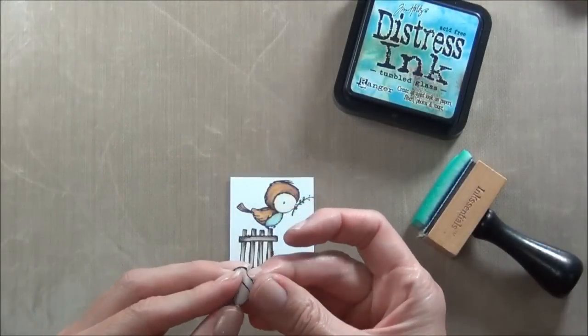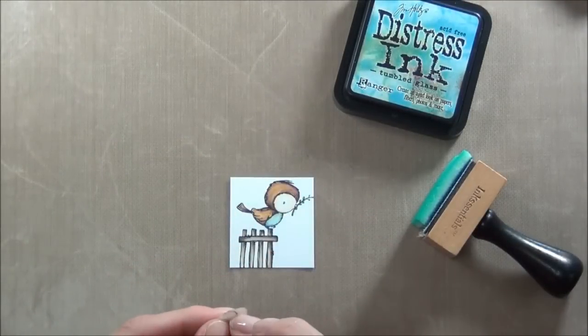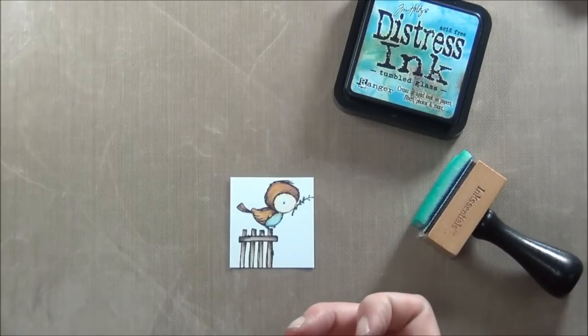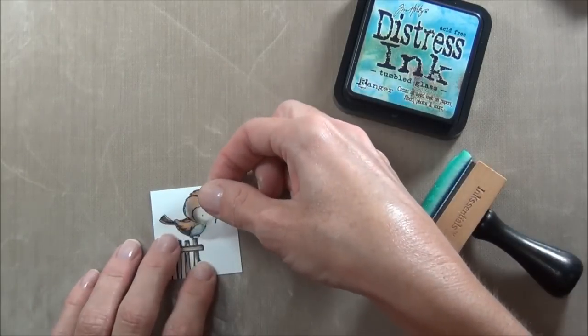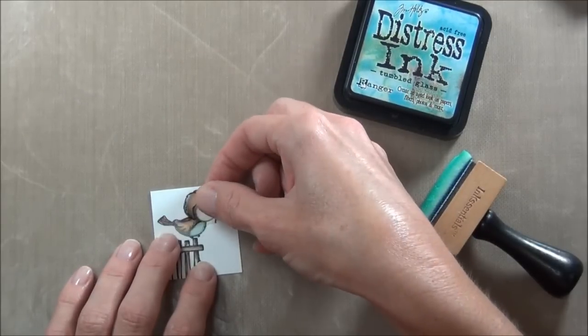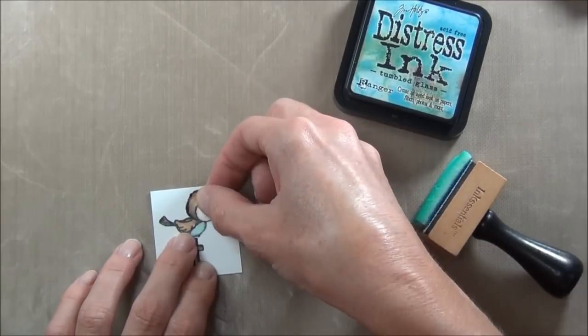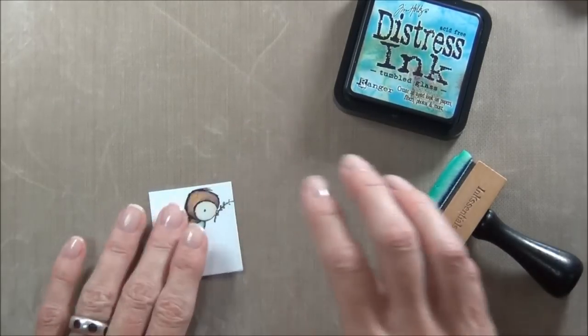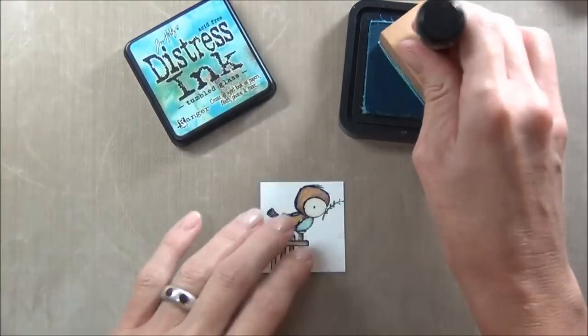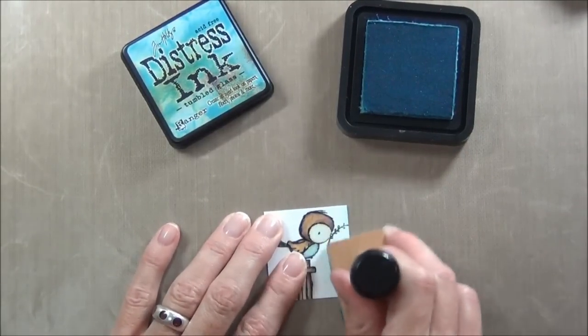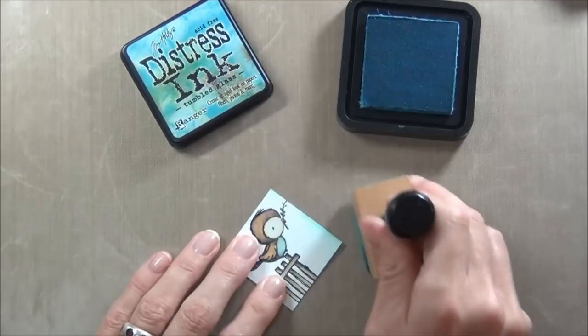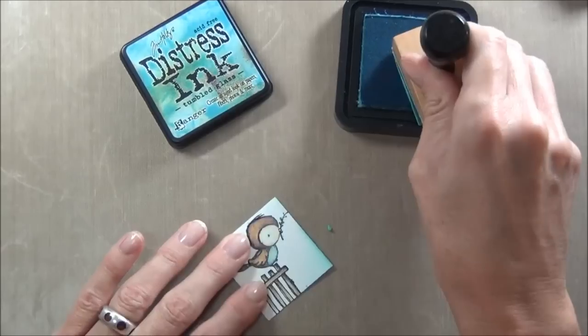I've cut my little panel down and created a mask for the bird. Just cover him up. I want to add a little bit of distress ink. What have I chosen? Tumbled Glass. I'll start off my panel and just gently work the ink in towards the image.